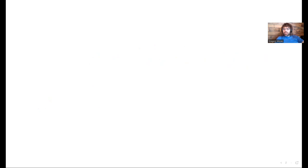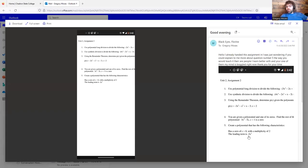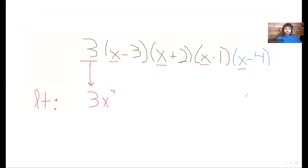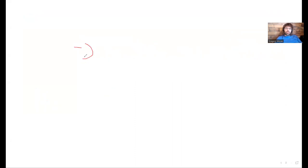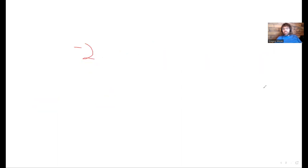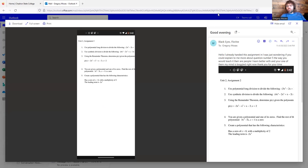So let's go back to the problem. What do we want the leading term to be? We want the leading term to be negative 2x cubed. So following this pattern, we're going to want a negative 2 in front. Just like this 3 gave us 3x to the fourth.